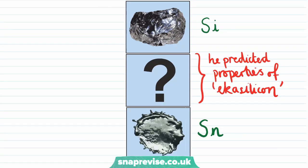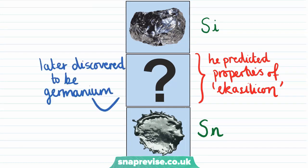An element that showed excellent agreement with these predicted properties and that had the correct mass was later discovered and we call it germanium. The fact that Mendeleev was able to predict the existence and properties of germanium shows how useful ordering the elements in terms of atomic mass was.